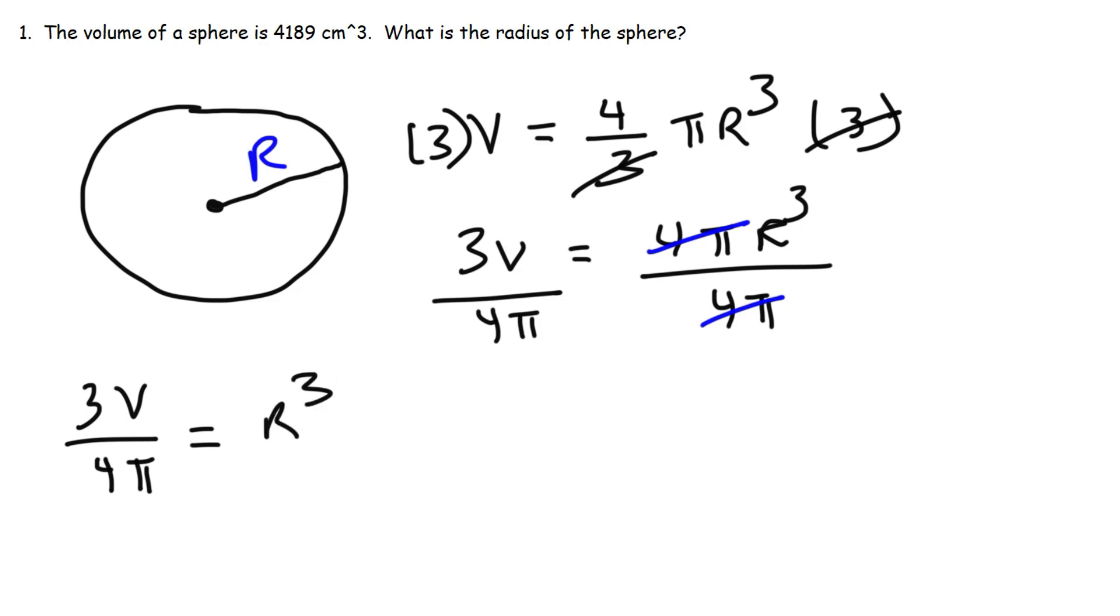So now what I have is 3v over 4 pi is equal to r to the third power. Now, to get r by itself, I need to raise both sides of the equation to the 1 third power, or take the cube root of both sides.